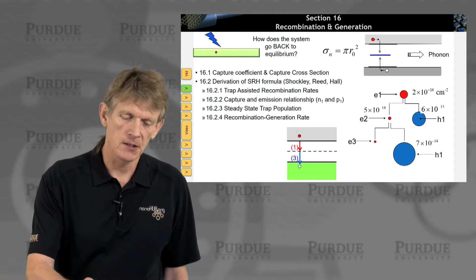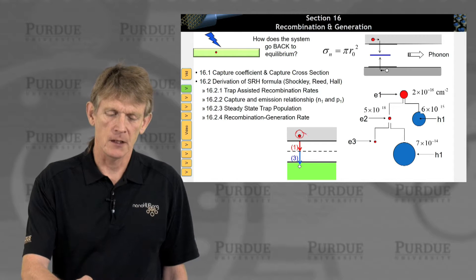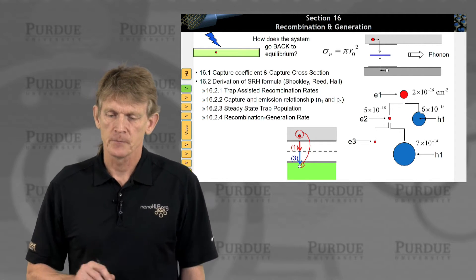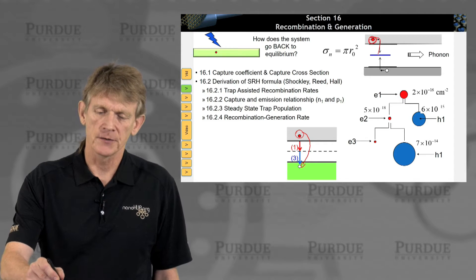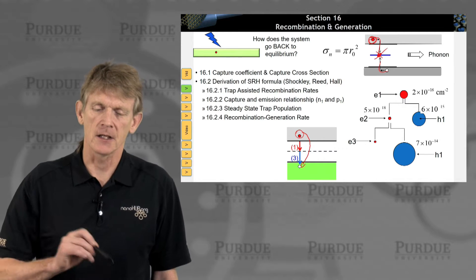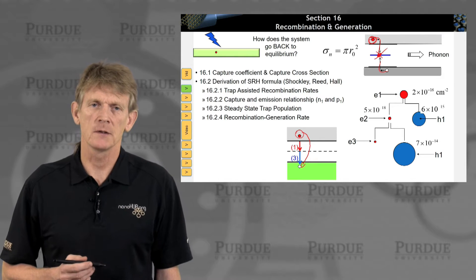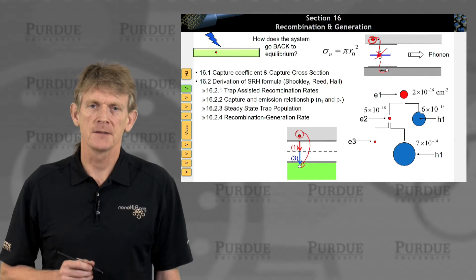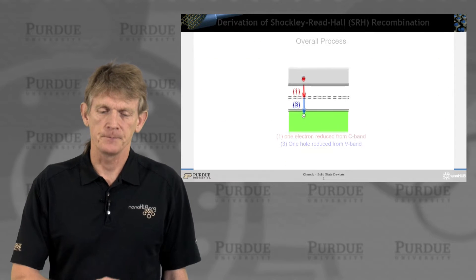You see the process here. The fundamental thing we're after is an electron being destroyed by a hole, and that happens where an electron goes into the trap, gets trapped, a hole comes up and cancels out the electron. We will dissect this process in more detail and derive some recombination rates.